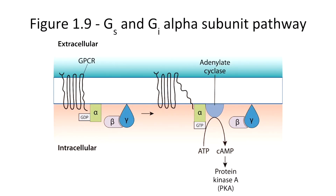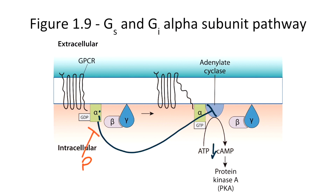From Figure 1.9, recall that when the alpha subunit is the GI alpha subunit, it inhibits adenylate cyclase, so cyclic AMP levels would be decreased. In the case of pertussis, the toxin inhibits this process, resulting in a rise in cyclic AMP. The abnormal disruption of this pathway is responsible for the inhibition of phagocytosis, which is why pertussis can survive inside the patient for such a long period of time.